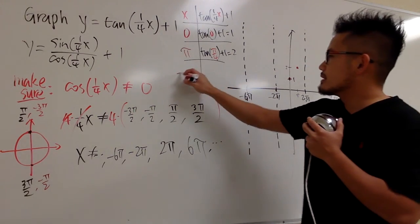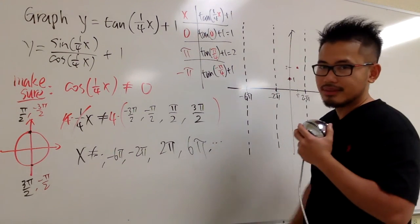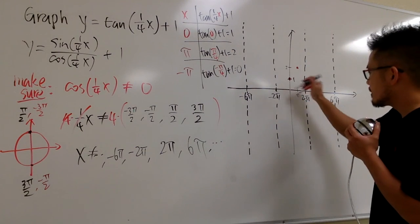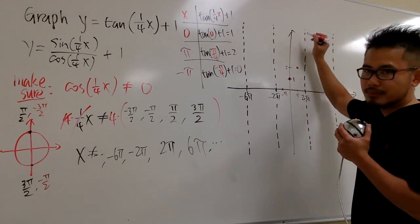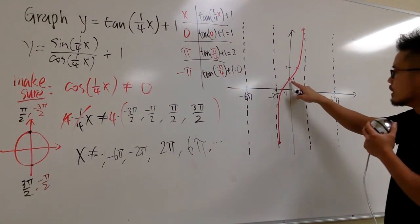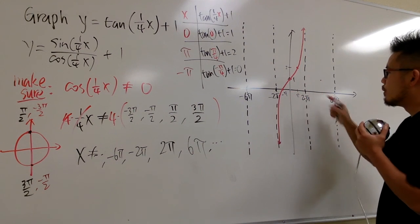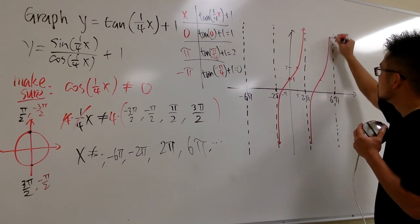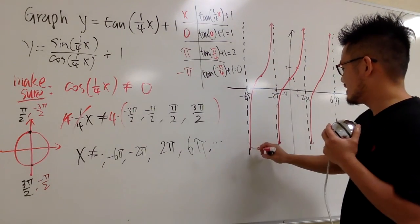For x = negative π, we get tangent(negative π/4) + 1 = negative 1 + 1 = 0. So the point (negative π, 0) is on the graph. Now connect the dots with an increasing curve between the asymptotes, and repeat the same shape for each period — adding 4π each time — to extend the graph in both directions.